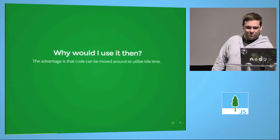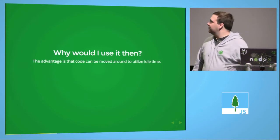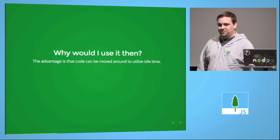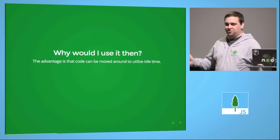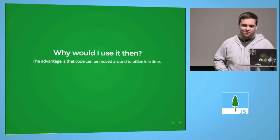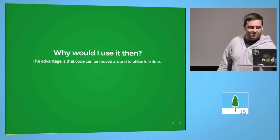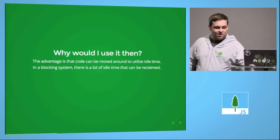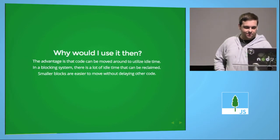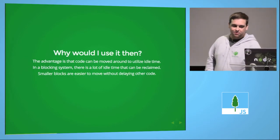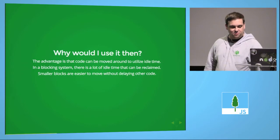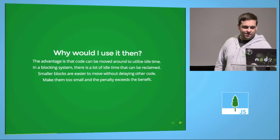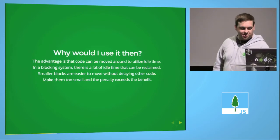So why would I use it then? Well, async lets the system shift the code around to execute it more efficiently, use your idle time — that's the whole point of Node — and in a blocking system there's a lot of idle time to reclaim. But smaller blocks are easier to move without delaying other code. They run fairly quickly, but make them too small and there's a performance penalty.